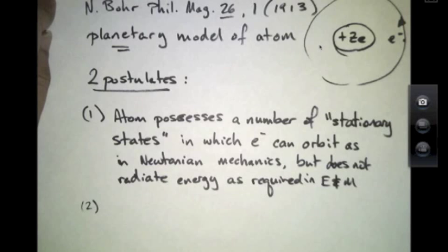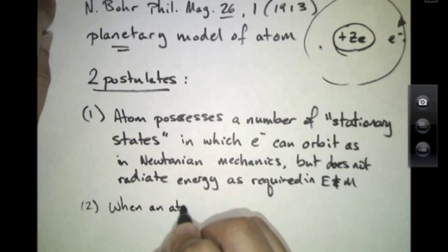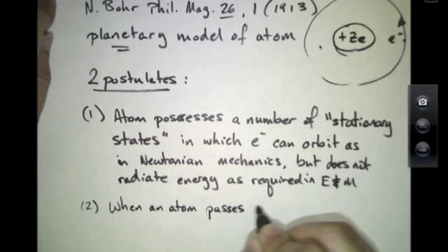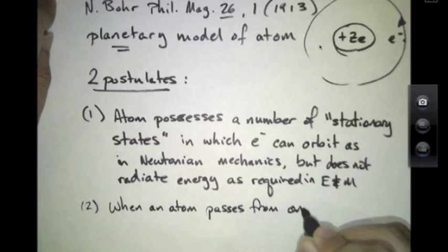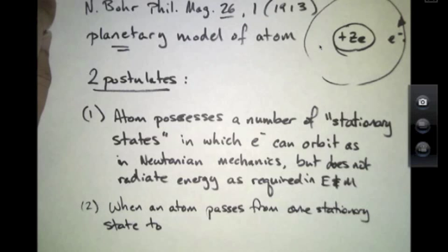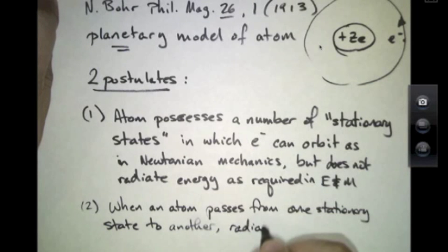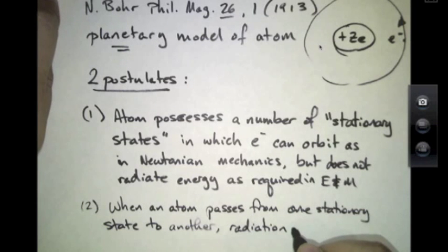The second postulate in Bohr's model was that transitions of the atom from one stationary state to another, the atom will emit radiation or absorb radiation in the form of a photon.